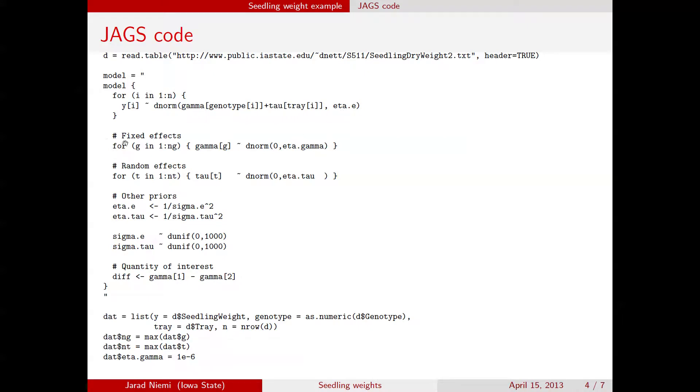We have a prior for our fixed effects, there's only two of them, it's normally distributed, mean zero, precision eta gamma. We have a similar prior for our random effects, normally distributed again, mean zero, precision eta tau.